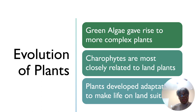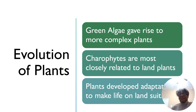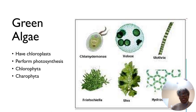There are plants located in water, but also plants on land that we see almost every day. Land plants are thought to have evolved from green algae — green algae is thought to have given rise to more complex plants. There are two broad categories of green algae: charophytes, which are most commonly related to land plants, and chlorophytes. These plants developed certain adaptations that made them suitable for living on land.